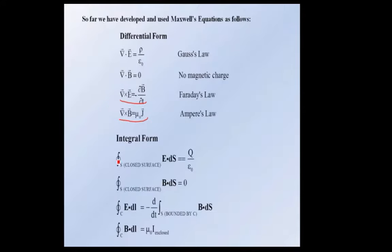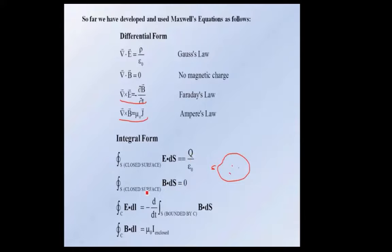These equations have integral forms which are often the most useful for making calculations. This is Gauss's law in integral form — you have a closed surface, and if you have charge Q inside, then the integral of E dot dS over this surface equals Q divided by epsilon zero, where Q is the total charge inside. Since there's no magnetic charge, Q sub B is zero, so the surface integral of B dot dS equals zero. That means all magnetic field lines must be closed — whatever flux enters a surface leaves it, so the integral is zero.